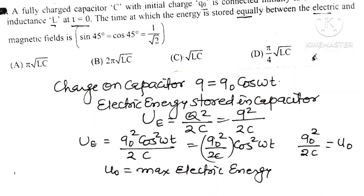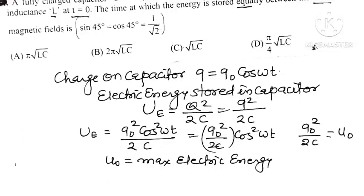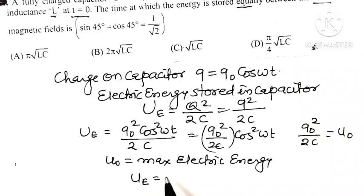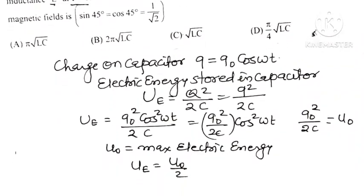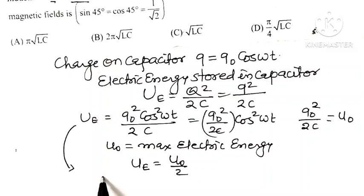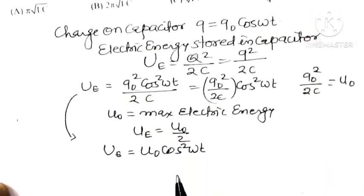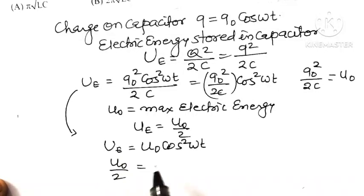Since energy is stored equally between the electric and magnetic field, the electric energy Ue must equal U0 divided by 2. Substituting into the equation Ue equal to U0 cos squared(omega t), we get U0 divided by 2 equal to U0 cos squared(omega t).